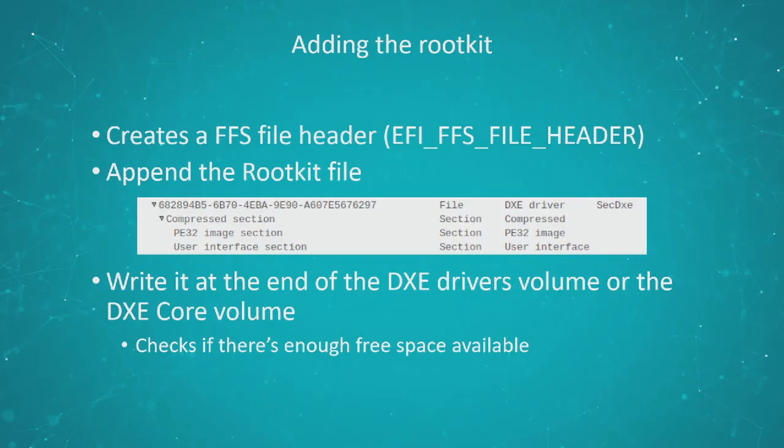Now that it has found the volume where to install the rootkit, the next thing is to add the rootkit to the volume. What it will do is create a firmware file system file header and then append the rootkit file to it. The rootkit file is a compressed section that contains two sections: one is the actual UEFI executable, and the other is a user interface section defining the name for this rootkit. The rootkit is called SECDXE. Then it will write this file at the end of the selected volume.